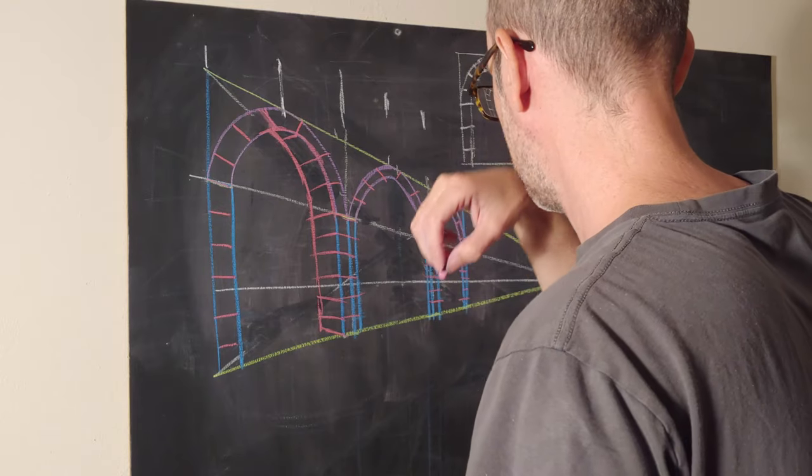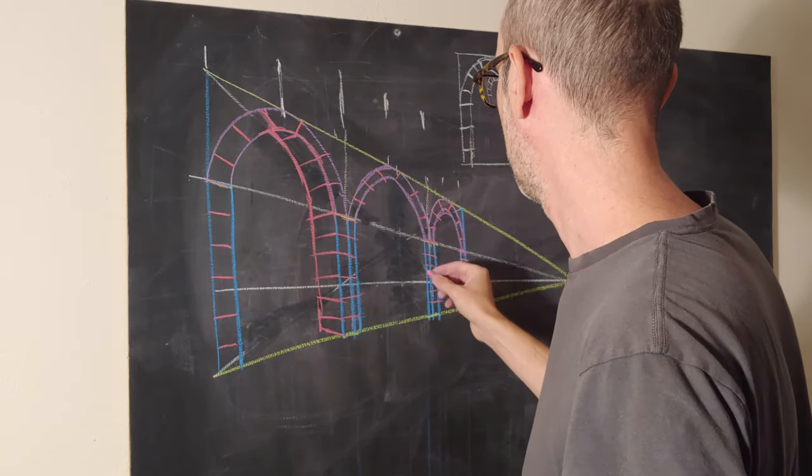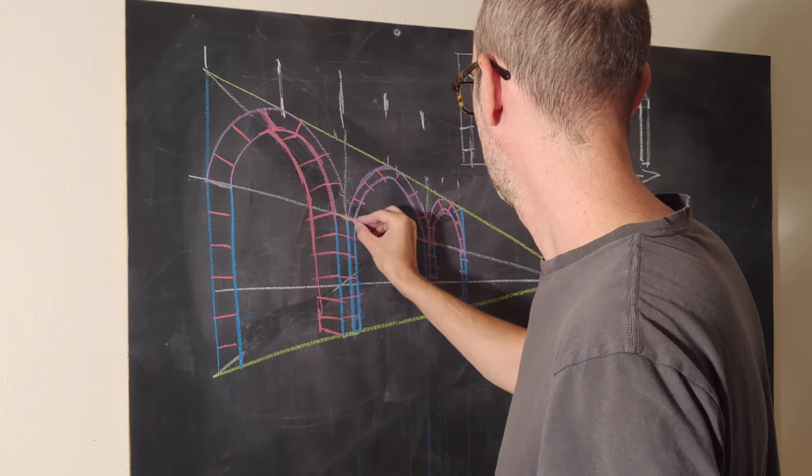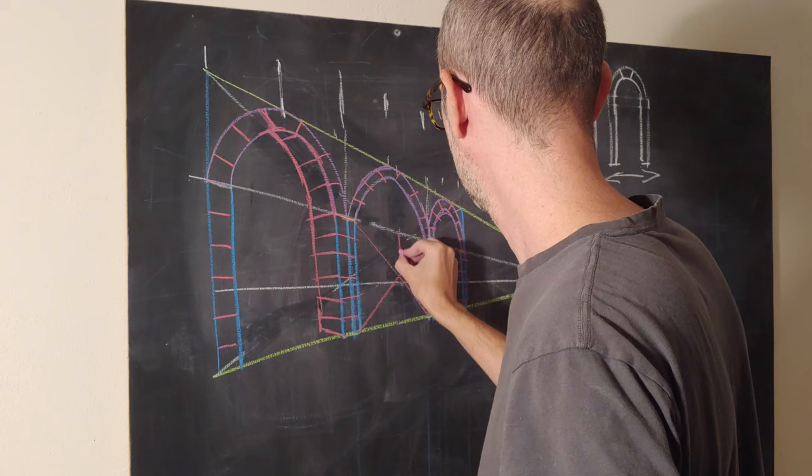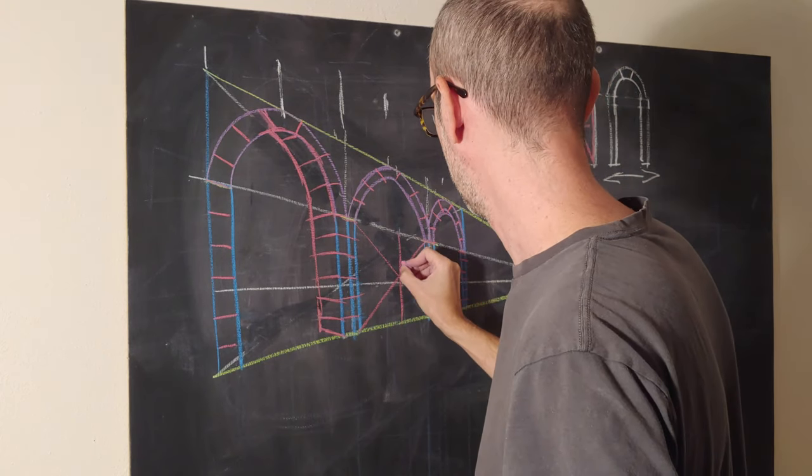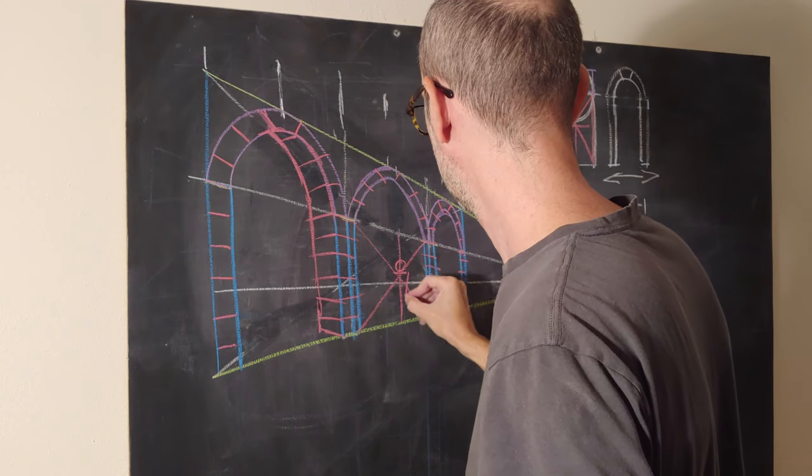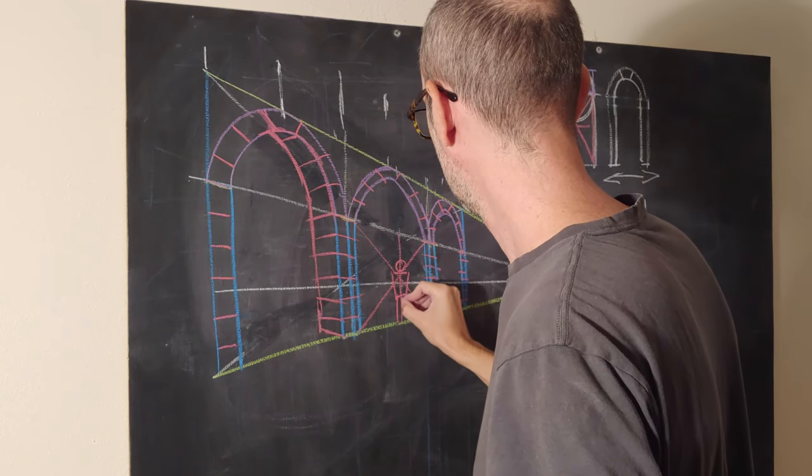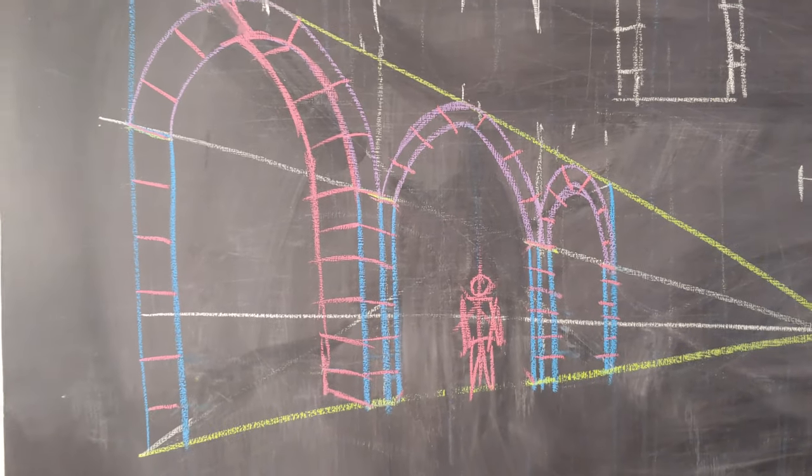So one of the things that you can do is if you wanted to put a person standing directly in the center of the disk, you could then X method subdivide, right? Find that. And then you could put your person standing right there. There you go.